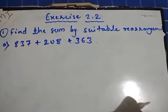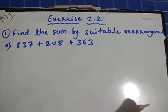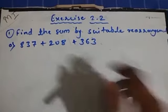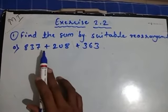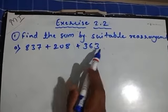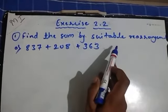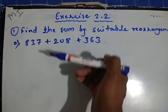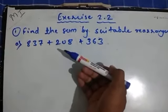Hello students, in this video we are going to study Exercise 2.2. The first question we are going to discuss is: find the sum by suitable rearrangement. The first example given is 837 plus 208 plus 363. These three numbers we have to add by arranging them in a proper way so that the addition becomes very easy and we can find the sum very fast.